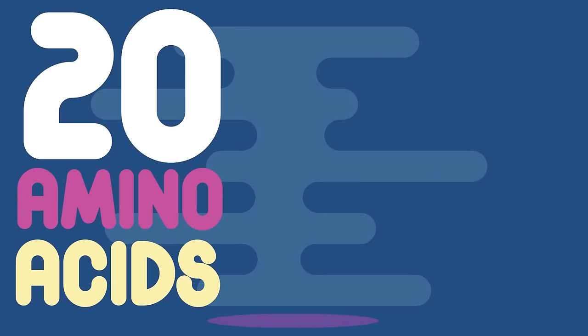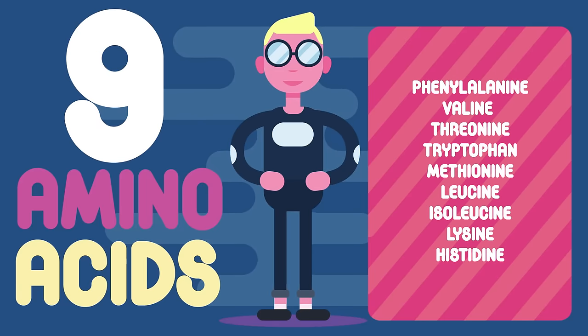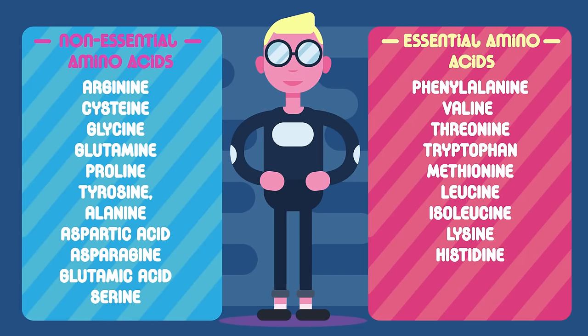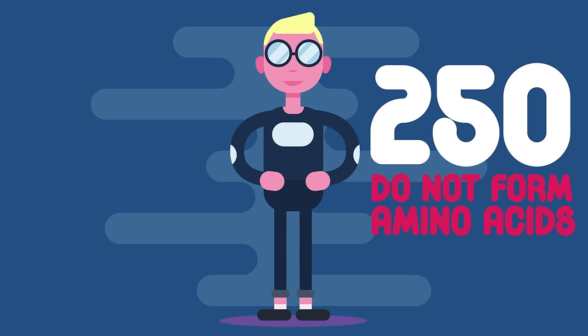There are 20 amino acids that make up our body's proteins. Nine of these we need to take in through our diet as our body cannot manufacture them — these are known as essential amino acids. Our body can however manufacture non-essential amino acids. Whilst 20 amino acids build up proteins, there are actually many others that do not form proteins, possibly over 250; they may form sugars, for example.